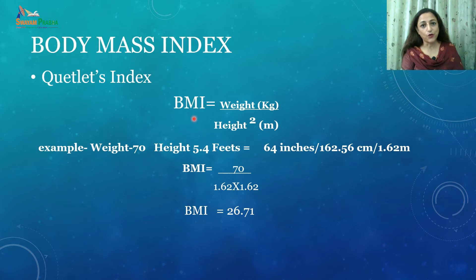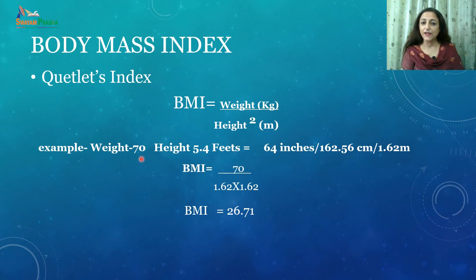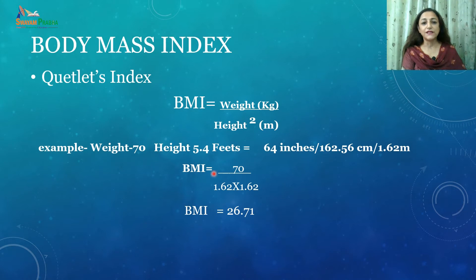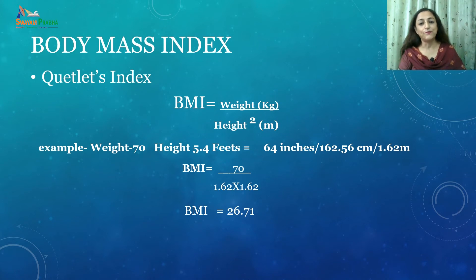BMI is calculated by taking weight in kilograms divided by height in meters squared. For example, if a person weighs 70 kg and is 5 feet 4 inches (64 inches = 162.56 cm = 1.62 m), then BMI = 70 ÷ (1.62 × 1.62) = 26.71. So that person has a BMI of 26.71.